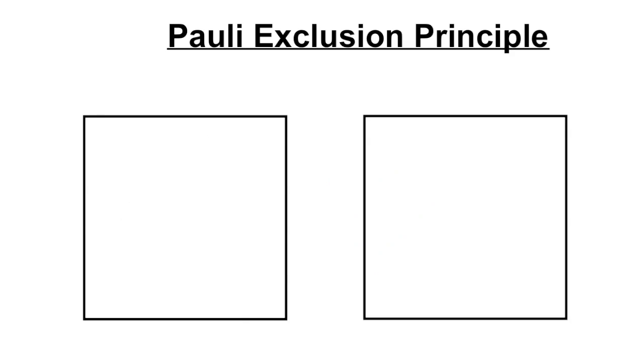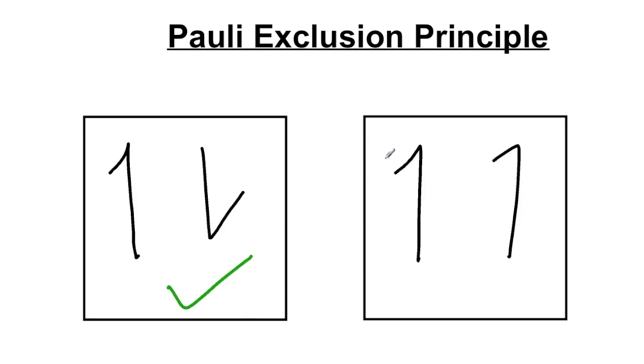The next rule is the Pauli exclusion principle. Pauli's exclusion principle tells us that each orbital - each individual little box, your s or your px, py, pz, or one of the 5d orbitals - can only hold two electrons. If it does have two electrons, those electrons have to have opposite spins. This would be correct - these two electrons have opposite spins. This is not correct - these two electrons have the same spin. They cannot be in the same orbital with each other if they have the same spin.